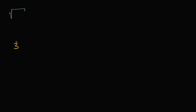Let's start with an example. We know that three to the second power — three squared — is the same thing as three times three, which is equal to nine. But what if we went the other way around? What if we started with a nine and said, what times itself is equal to nine? We already know the answer is three, but how could we use a symbol to express that? That symbol is the radical. We could write the square root of nine.